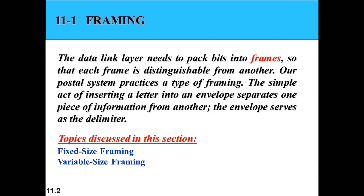Let's start with framing. Framing is about taking bits and sending them to another node. You cannot send the whole message at once — you need to break it into frames. The whole message is broken into different frames, which are then sent one by one. The data link layer needs to pack bits into frames so that they are distinguishable from one another.